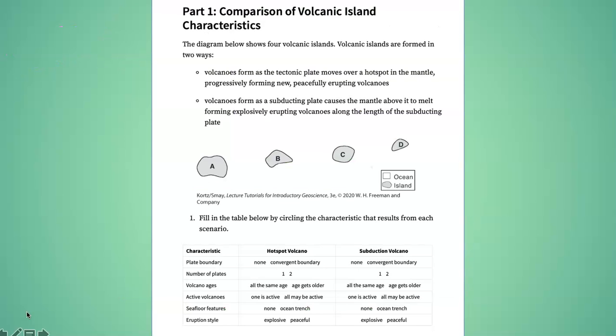The tutorial begins by showing you a chain of islands A, B, C, and D in the ocean. They talk about how these four islands could have two different origins. The first is that they might have formed as the plate moved over a hot spot from the mantle. The second is that they might have formed along a trench of a subduction zone. How would you know the difference?